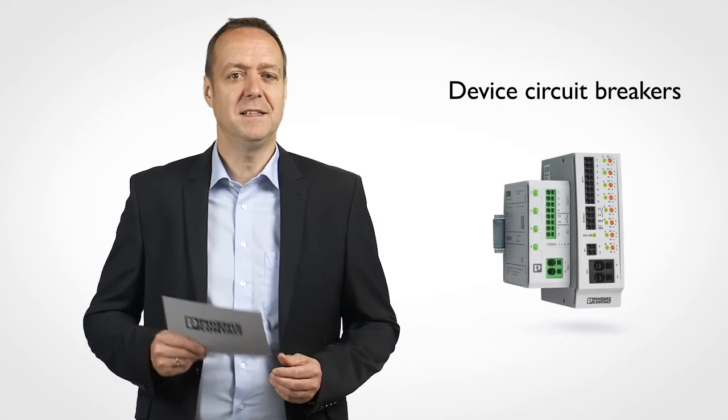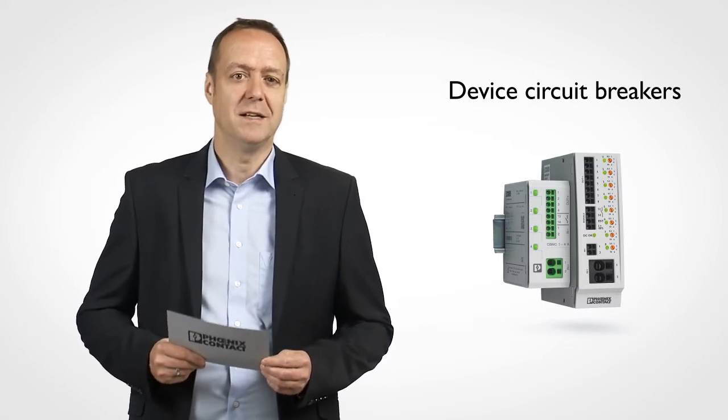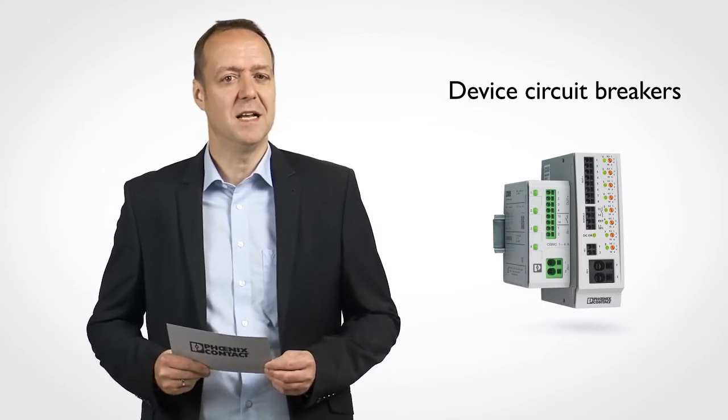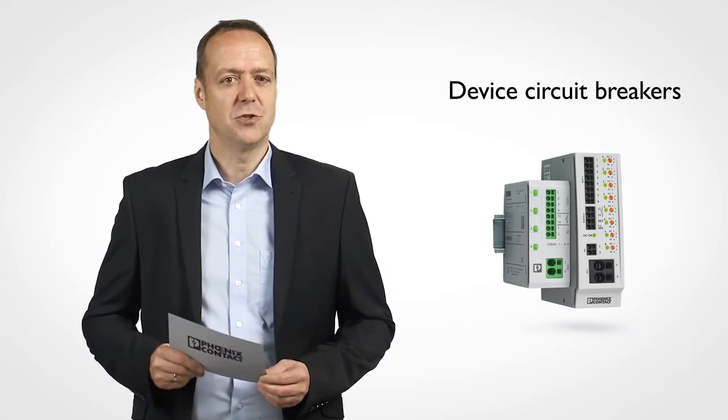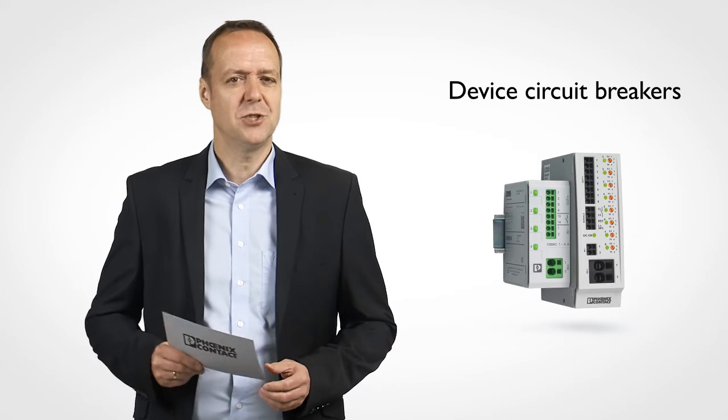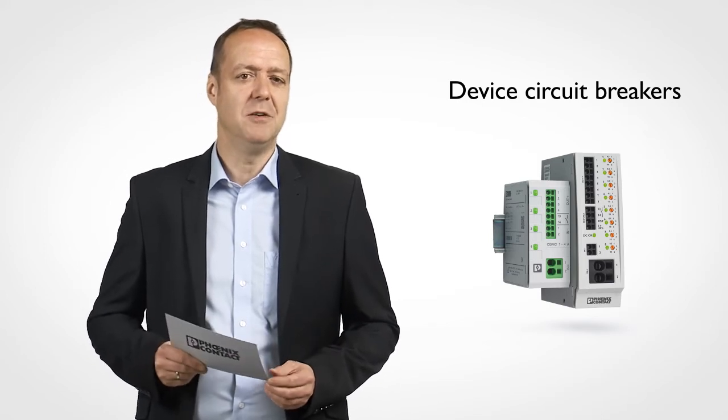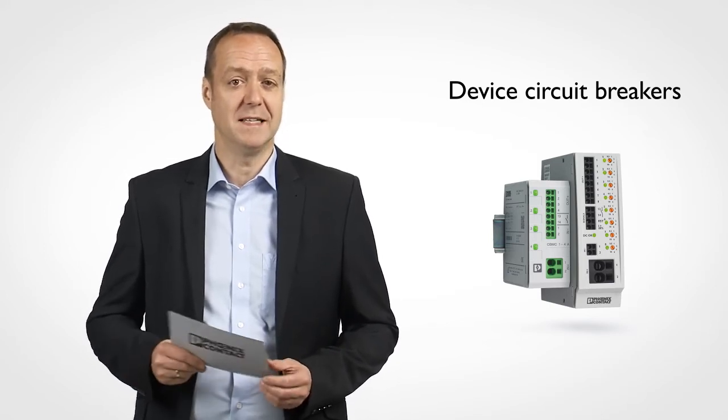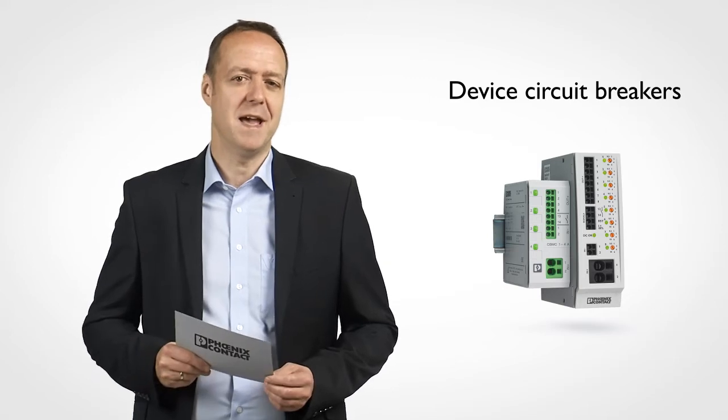Device circuit breakers play a crucial role here in ensuring the system behaves properly in the event of an error. Device circuit breakers are available with or without current limitation. How do these two types differ in application and with respect to their tripping characteristic? Let's take a closer look.